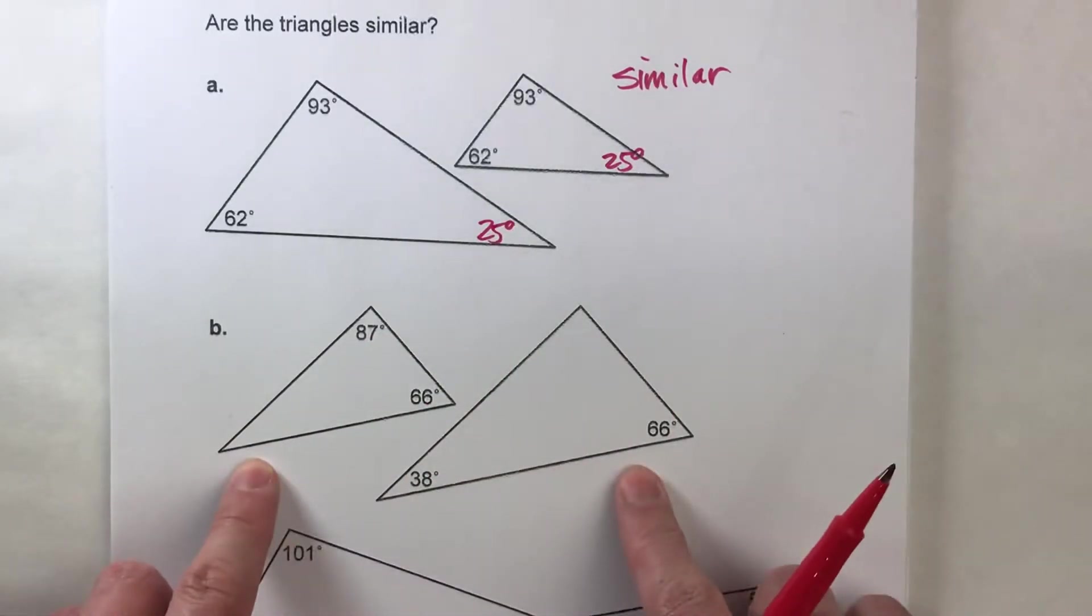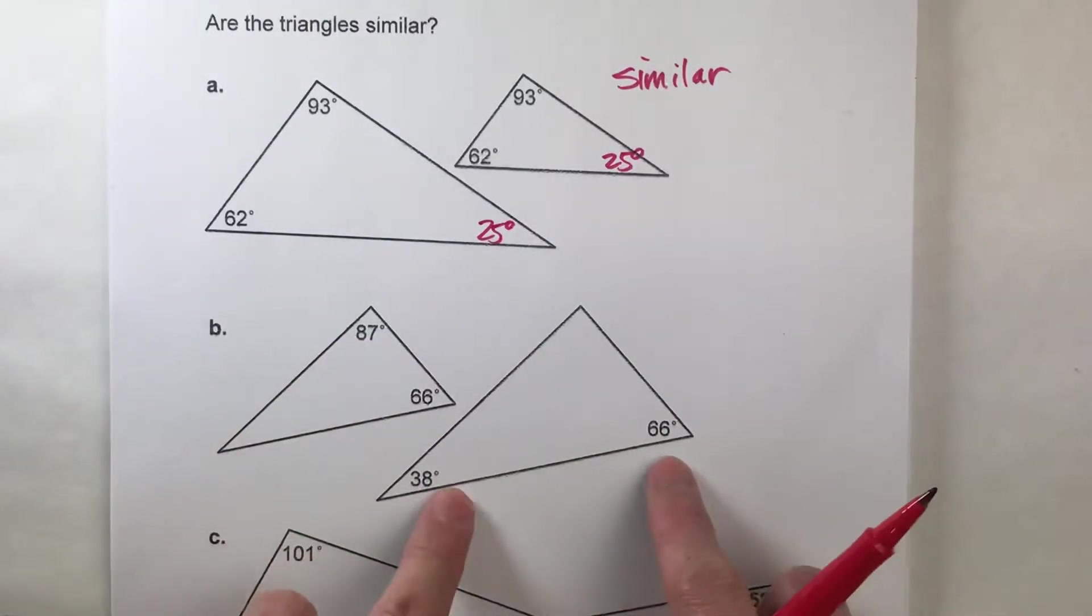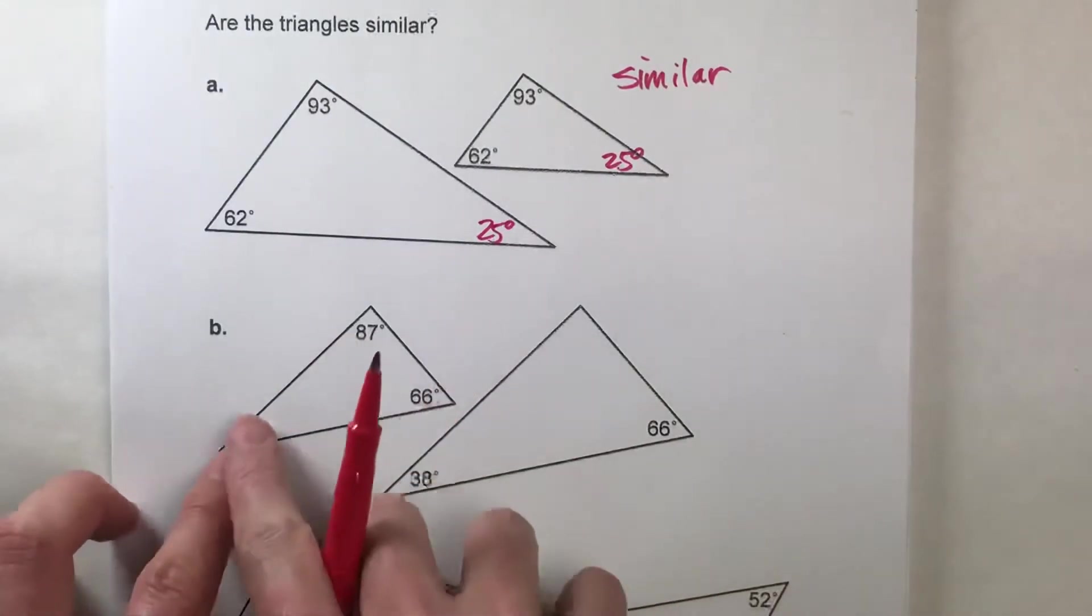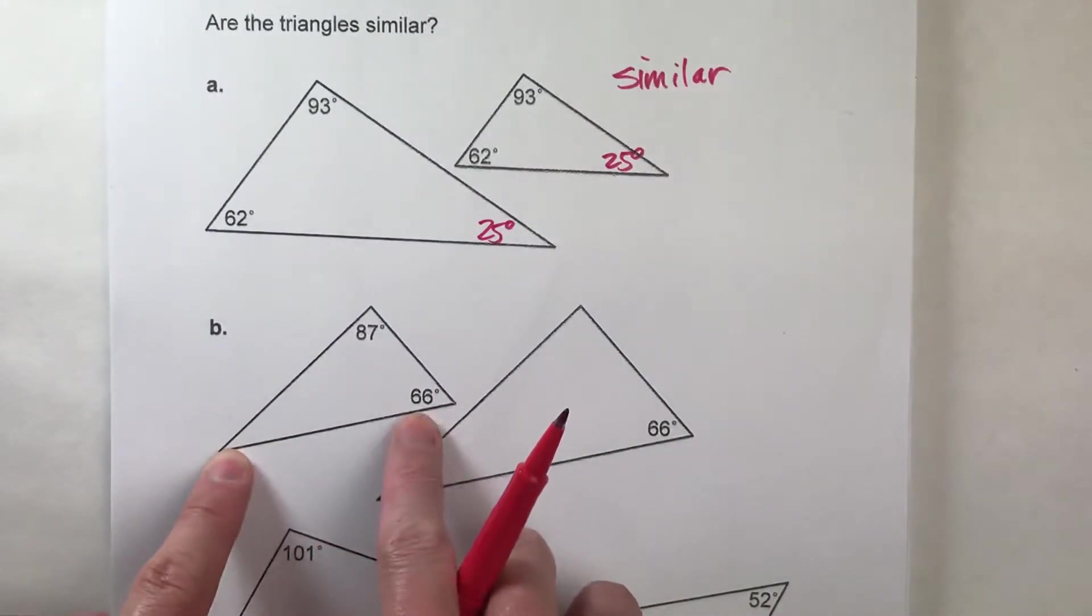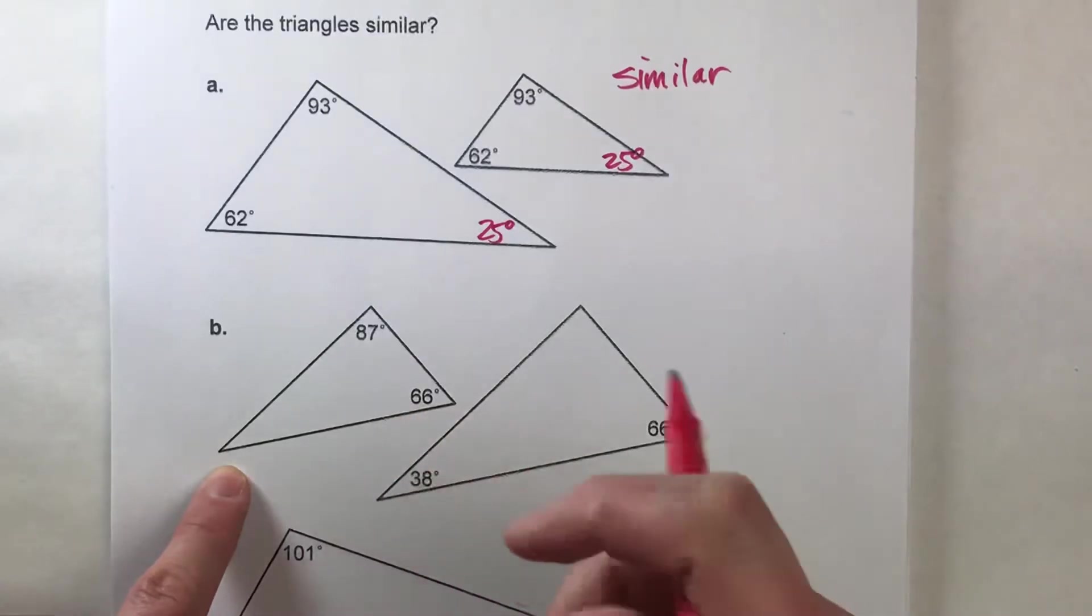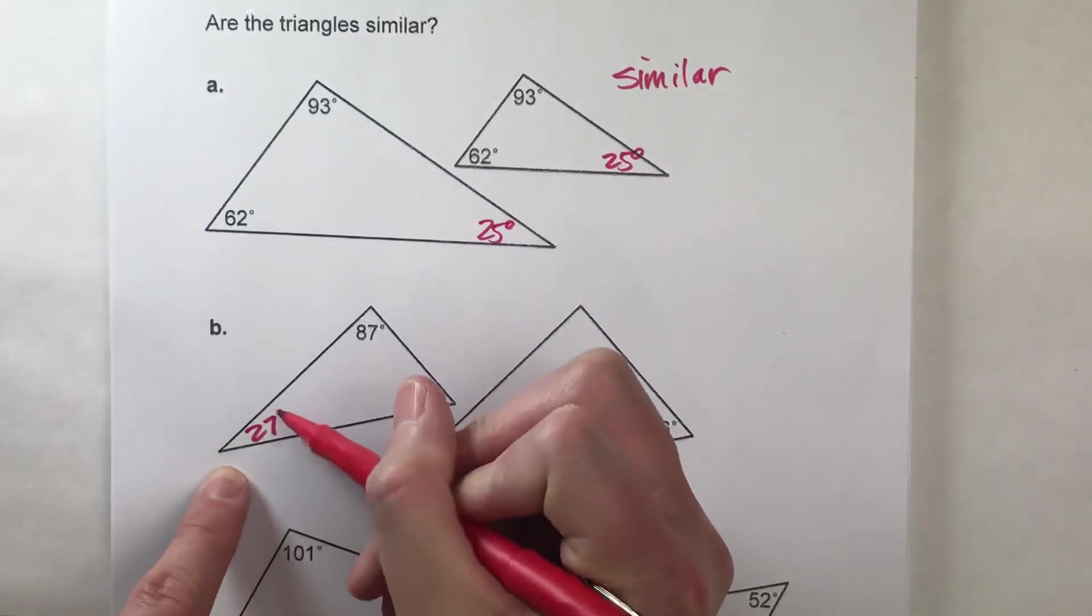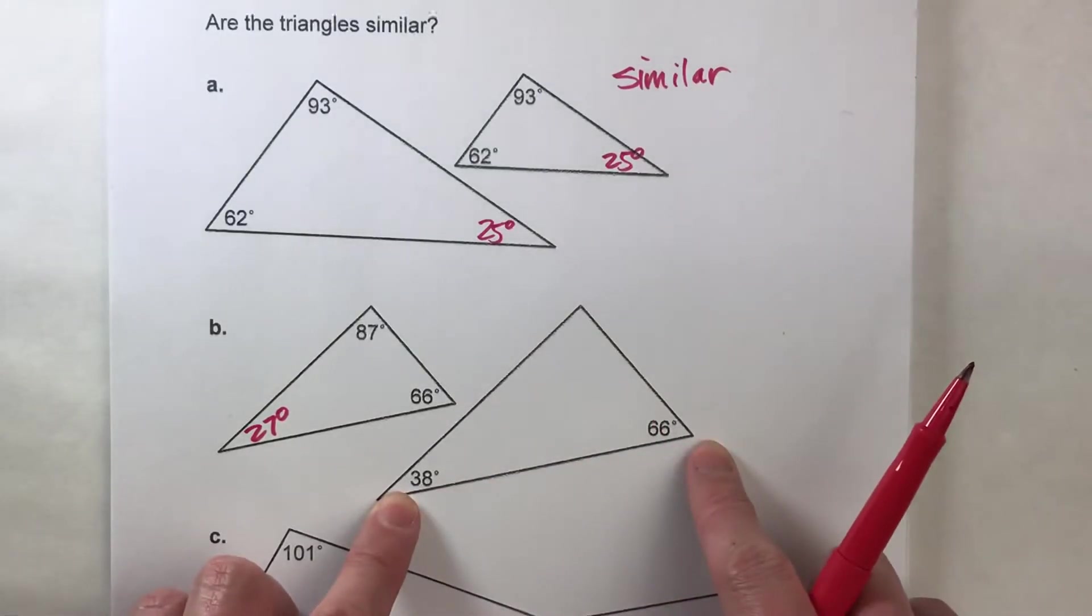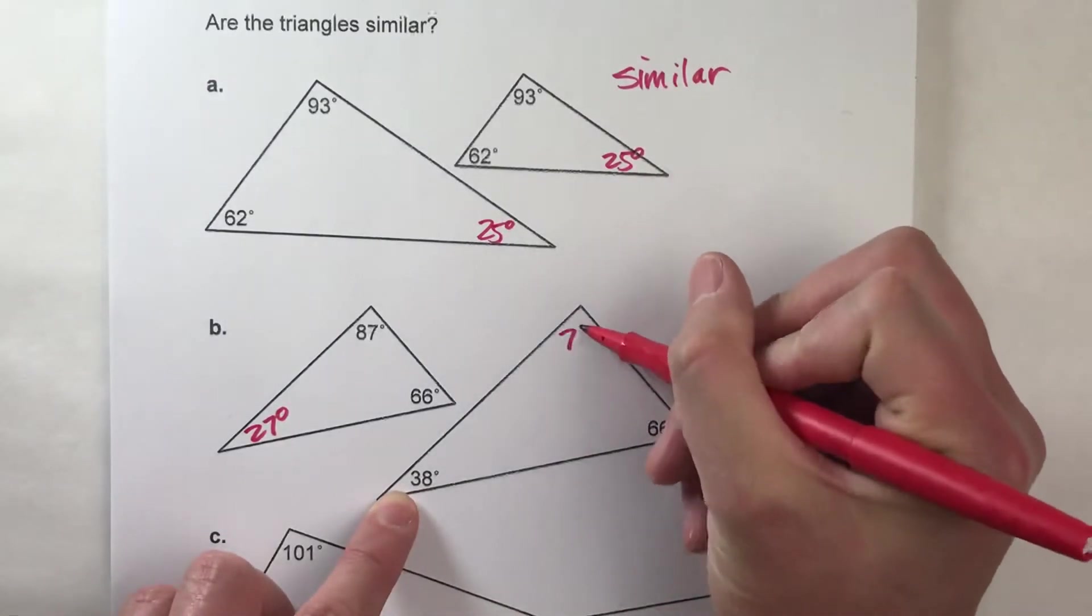Let's do a couple more. So we've got two more triangles. Notice right away the two angles given are not the same as these two angles although they have one in common. But now we've got to see if they have another in common. So let's start with this one. We've got 87, 66, they have to add up to 180. So 87 plus 66 is 153, which means this has to be 27 degrees to add up to 180. Over here, 38 and 66. 38 plus 66 is 104, so this has to be 76 degrees.